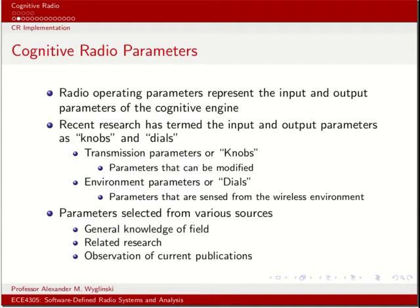We can look at a cognitive radio system as a black box that takes inputs and provides outputs, with intelligence making decisions based on the relationship between those inputs and outputs. We can almost look at this black box as a collection of knobs and dials, just like on a radio. The transmission parameters are the knobs — things you're fine-tuning. The environmental parameters can be viewed as dials — what you're detecting about the environment, with a numerical quantity associated with them. From these parameters, we make relationships using mathematical models, and our decision-making process attempts to make the best association between the knobs and the dials.